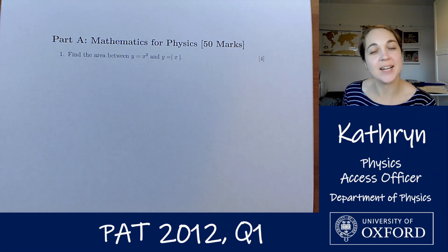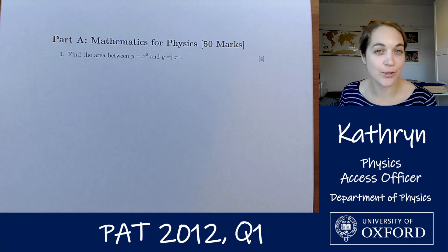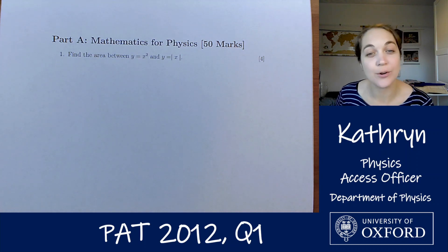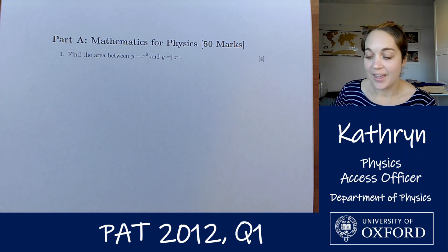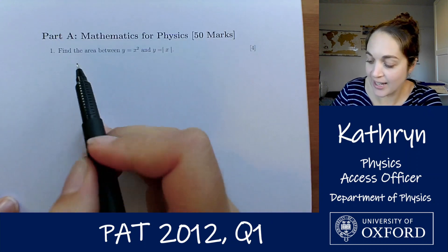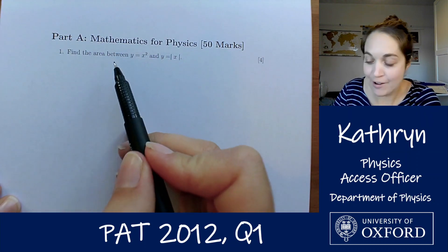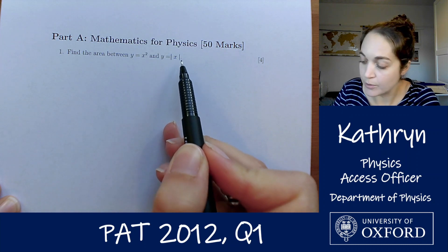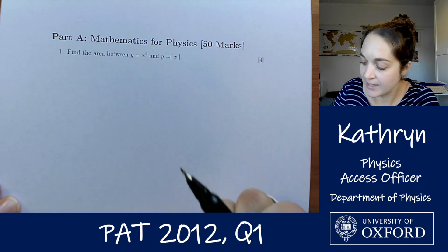Hello everyone, I'm Katherine, I'm the Physics Access Officer at Oxford University and today I'm going to be having a look at how I would solve question 1 from the 2012 PAT paper. It's quite a nice short question, we've got it here, it says find the area between y equals x squared and y equals mod x, that's the modulus of x.